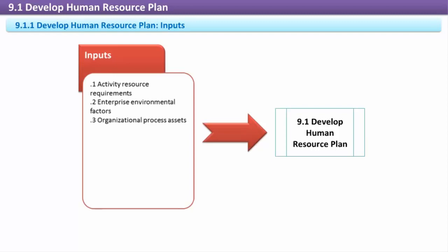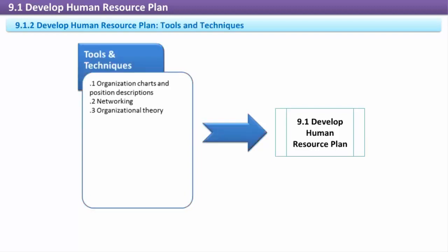Organizational Process Assets: Organizational Process Assets are the source of existing policies, processes, organizational data and knowledge. The organization may have standardized project role descriptions and templates. Lessons learned from past projects will also help in developing the Human Resource Plan.